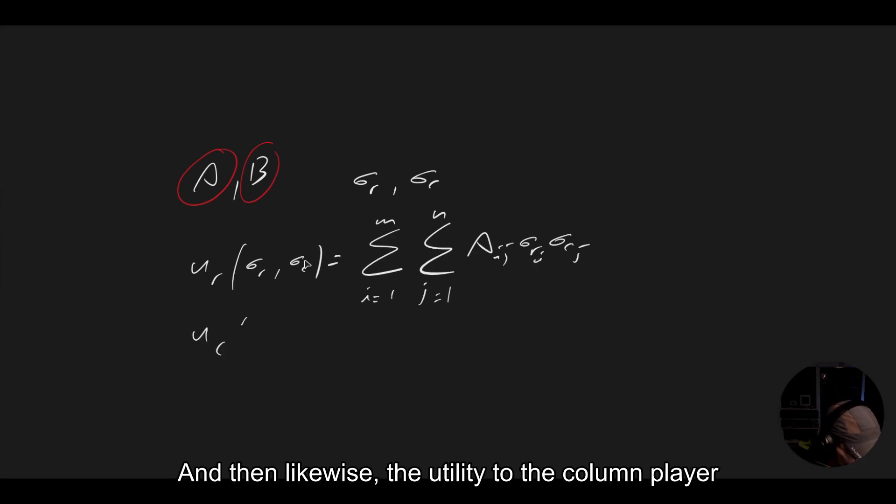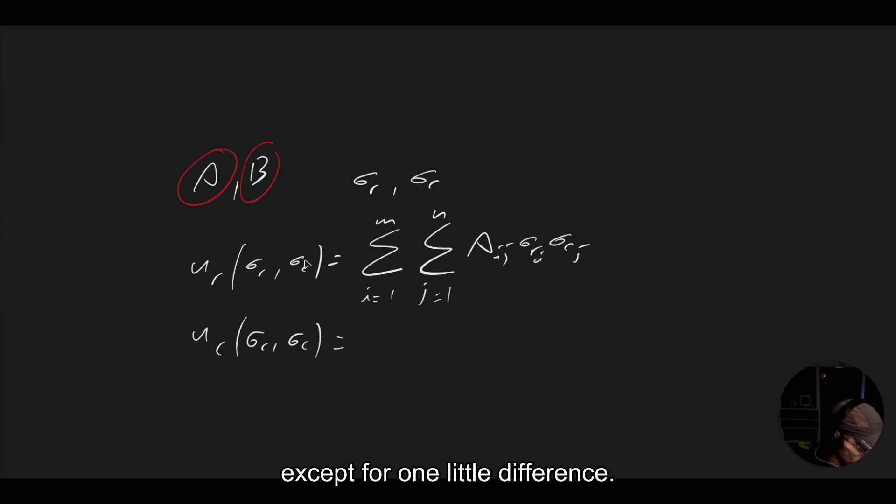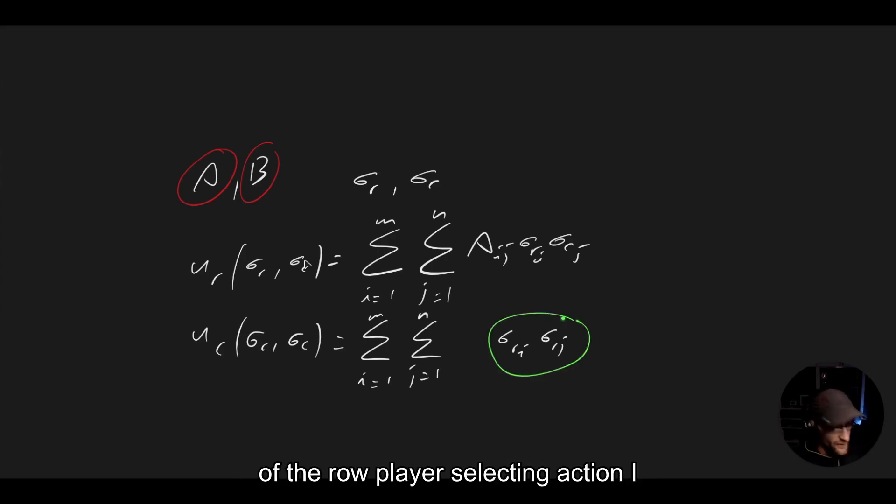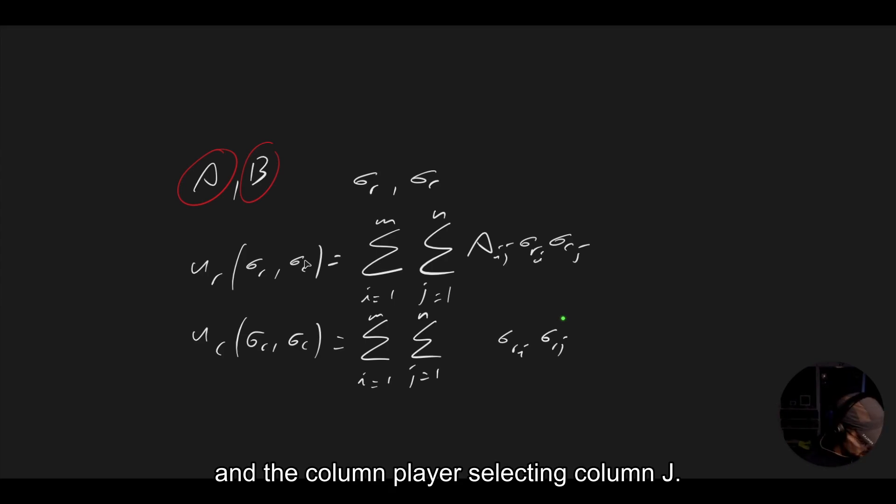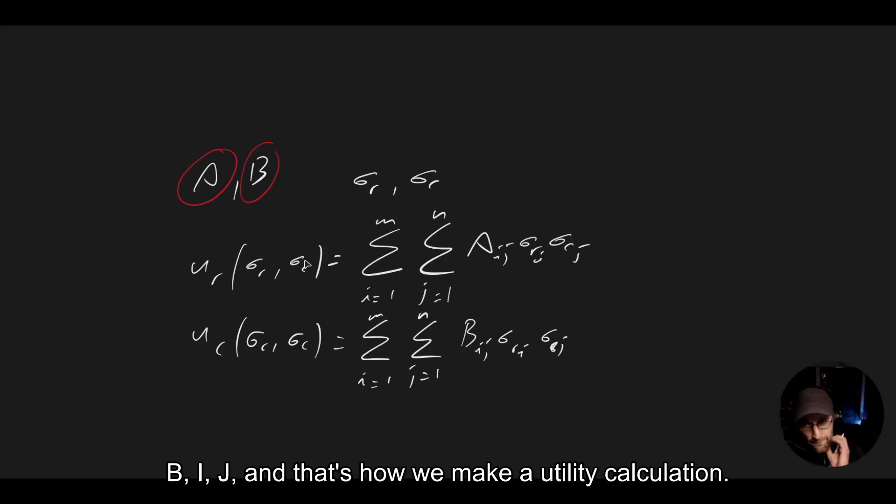And likewise, the utility of the column player is going to be the exact same thing, except for one little difference. We're going to have that same sum, because the strategies just tell us the outcomes, which scenario we end up being in, sigma R_I, sigma C_J. That means that this is the probability of the row player selecting action I and the column player selecting column J. The only difference is that what the column player gets is given by matrix B_I,J.